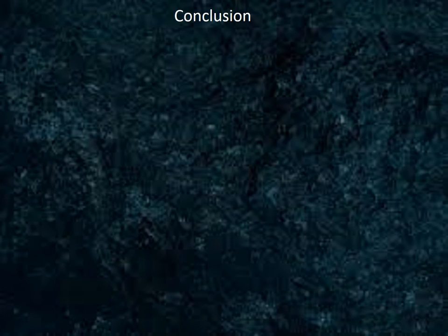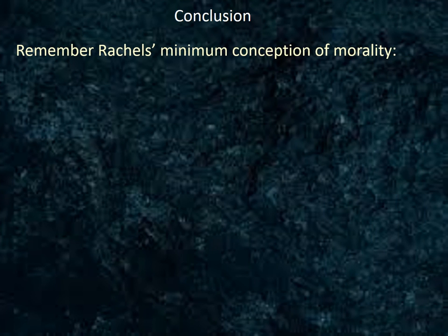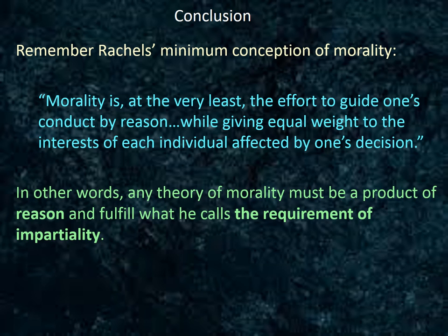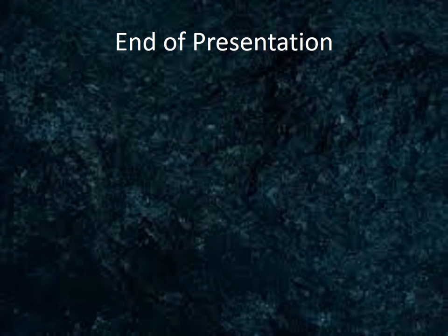To conclude, recall Rachels' minimum conception of morality: morality is, at the very least, the effort to guide one's conduct by reason while giving equal weight to the interest of each individual affected by one's decision. According to Rachels, any theory of morality must be the product of reason and fulfill what he calls the requirement of impartiality. Remember that these lectures are meant to supplement the readings, not replace them — there are more details in the text itself, so please make sure that you read carefully. Until next time.